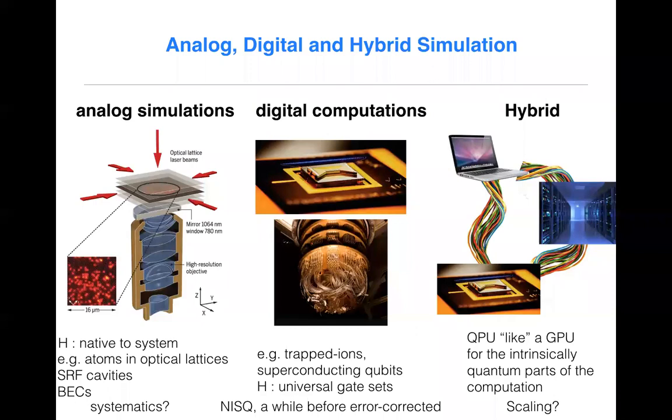So when thinking about such computations, one has in mind essentially three different types of architectures. There's analog simulations. So here one uses the underlying Hamiltonian dynamics of the system to actually simulate the system that you want to understand. So one tries to map the quantum field theory or the quantum many-body system onto the actual components, the underlying dynamics of the hardware. And then that hardware evolves under its natural time evolution. And then at the end one can then unencode and extract information about the systems that you're interested in.